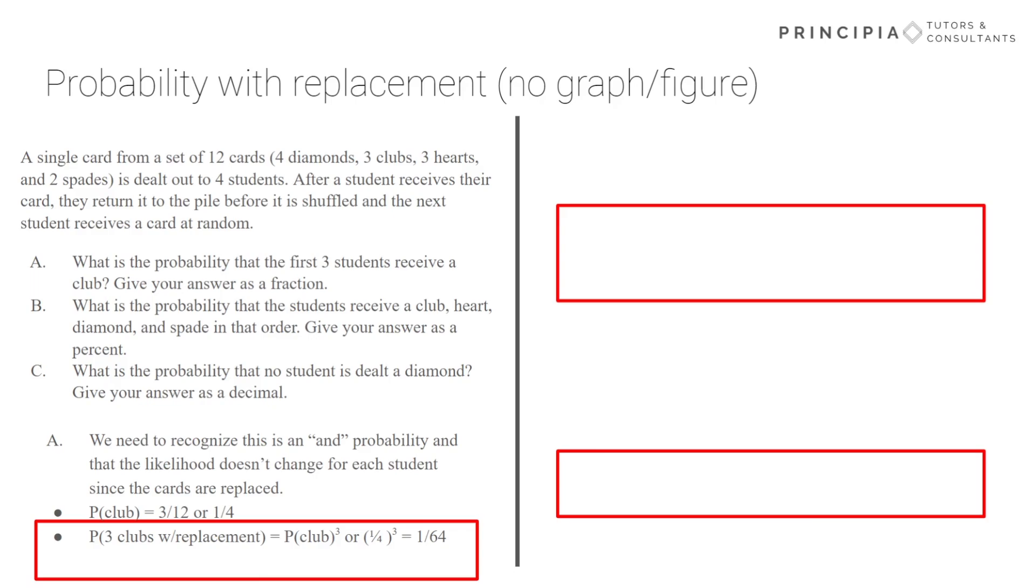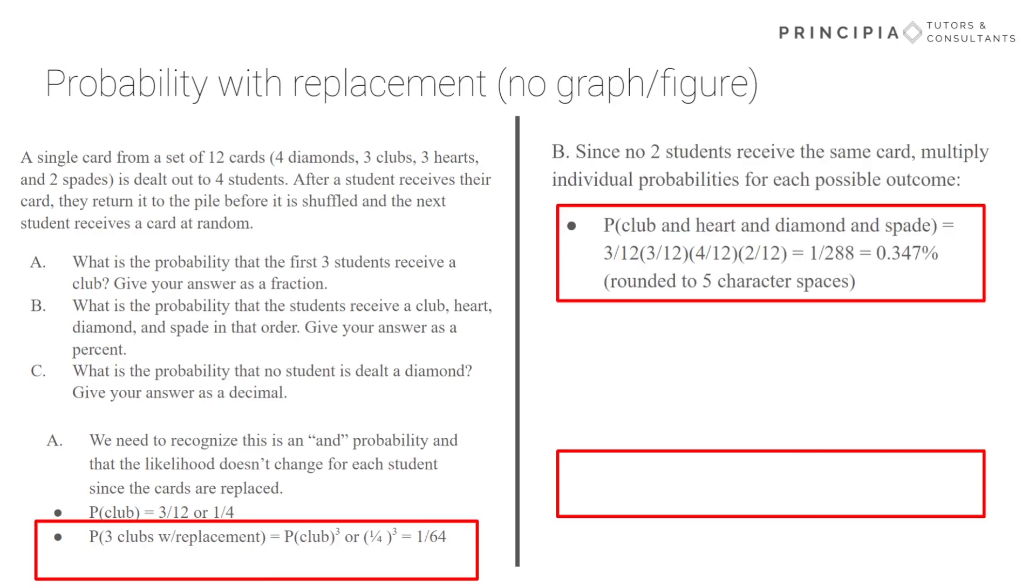All right, part B is asking that no student receives the same card in the specific order: club, heart, diamond, and spade. And so we're multiplying those probabilities by one another to ultimately result in 0.347%. That's rounded to five character spaces, and it's giving the answer as a percent as specified by the question.